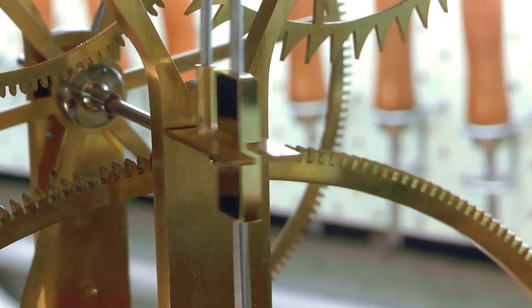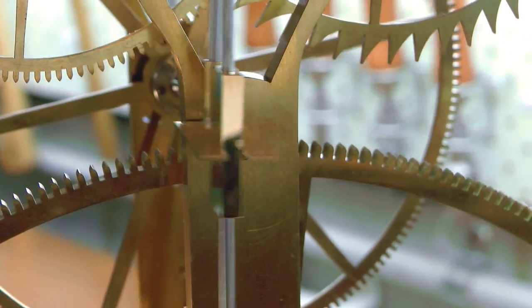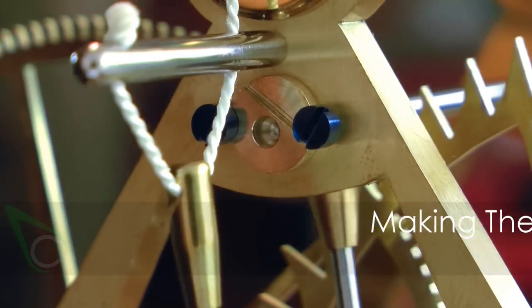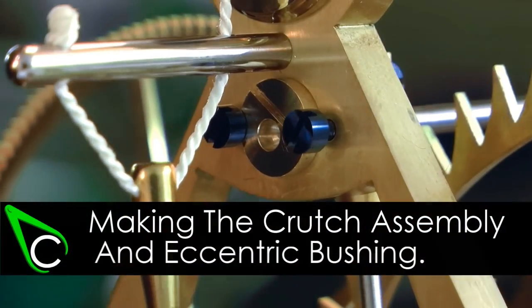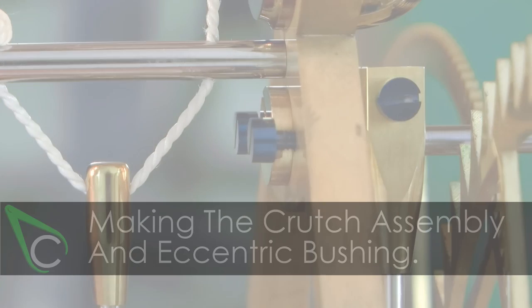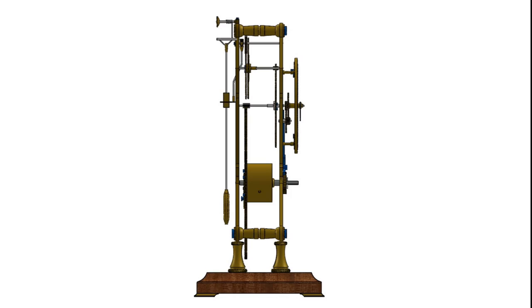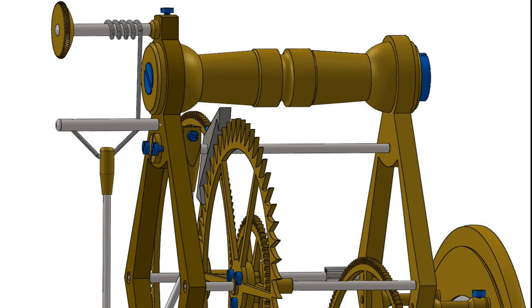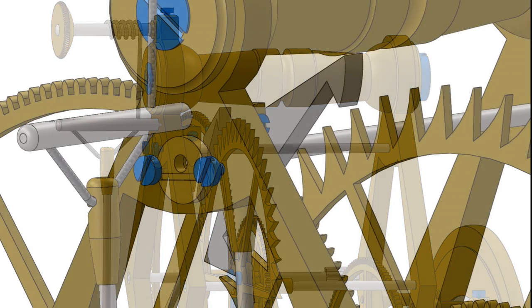As I approach the end of the skeleton clock project, it's time to start work on a crucial part of the mechanism, the escapement. Generally speaking, the escapement is considered to be the pallets and the escape wheel, but there are usually a few extra components required to make the whole thing work, and it's those related components that I'm making in this video.